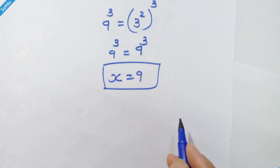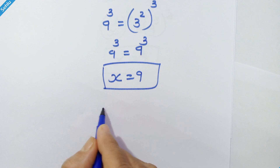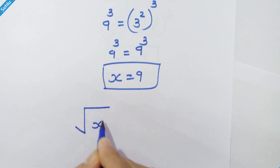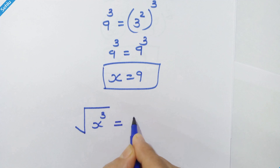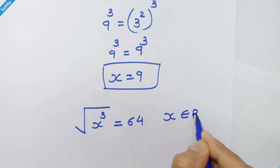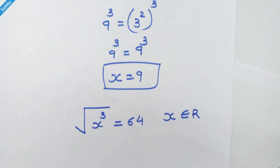Now here is an extra question for you to solve: if we have square root of x cube is equal to 64, where x is a real number, please try it yourself and let me know the answer in the comments. Thanks for watching. Don't forget to subscribe. See you in the next one. Bye bye.